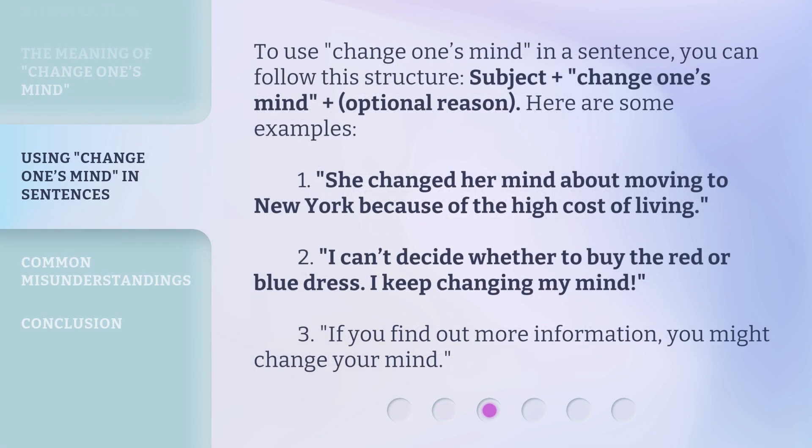To use change one's mind in a sentence, you can follow this structure: subject + change one's mind + optional reason. Here are some examples. 1. She changed her mind about moving to New York because of the high cost of living. 2. I can't decide whether to buy the red or blue dress — I keep changing my mind. 3. If you find out more information, you might change your mind.